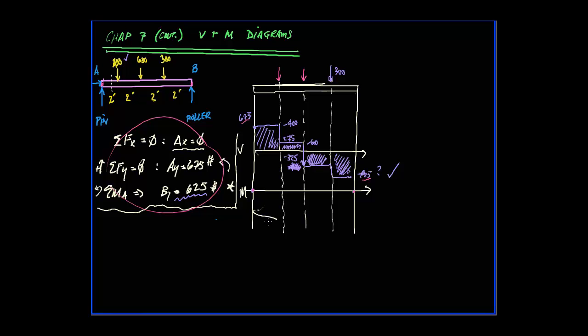The second rule we're going to learn is the moment at that loading is going to equal the area of the shear section. Basically if I find the area right here of this first section from the end to the first loading, that is going to tell me what this point is.